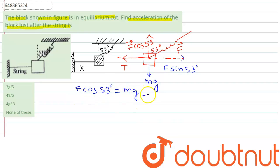This is our equation 1. Now cos 53 is 3 divided by 5. So F into 3 divided by 5 equals Mg. From there we can find F, which will be equals to 5 by 3 Mg.